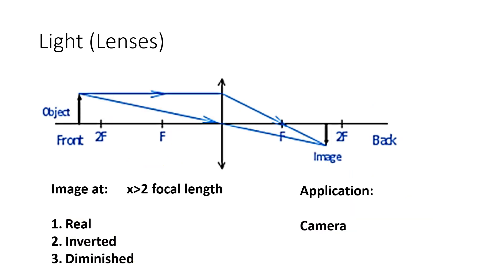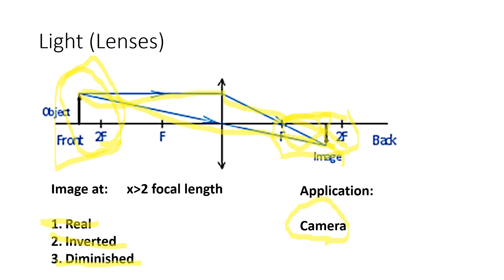For the fifth diagram, place the object slightly beyond two focal length. Draw the horizontal line through one F and through the center — they should coincide in between one and two focal length. The properties: because they are on opposite sides of the lens, it is real and inverted. Because the image is a smaller size, it is diminished. Application: camera, as the object is bigger than the image.